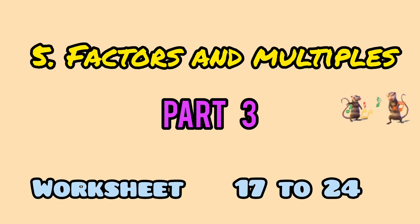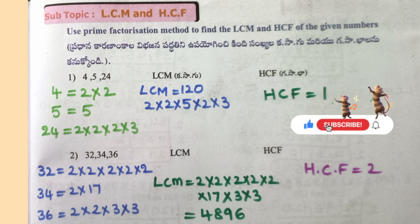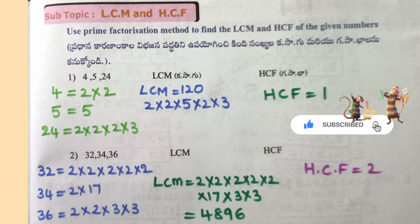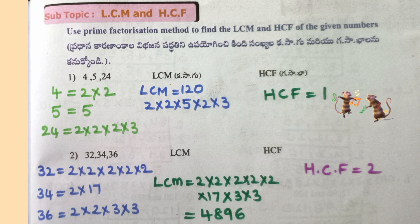Factors and Multiples Part 3, Worksheet 17, question 24. Use the prime factorization method to find the LCM and HCF of the given numbers. Question 1: 4, 5, 24. Factorizations: 4 = 2×2, 5 = 5, 24 = 2×2×2×3. LCM is equal to 120, HCF is equal to 1.